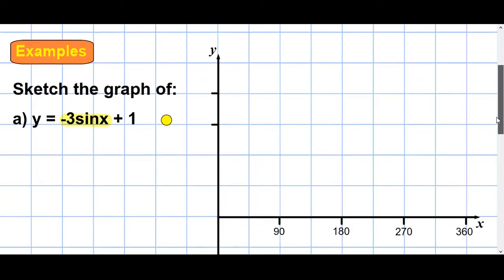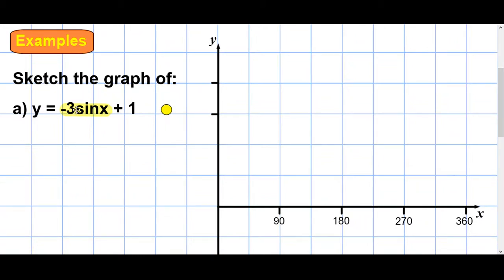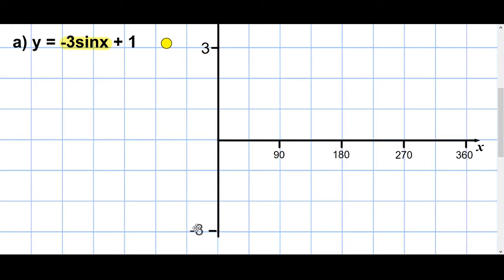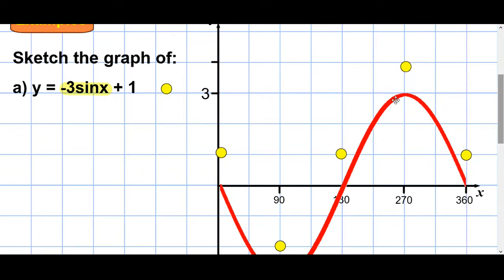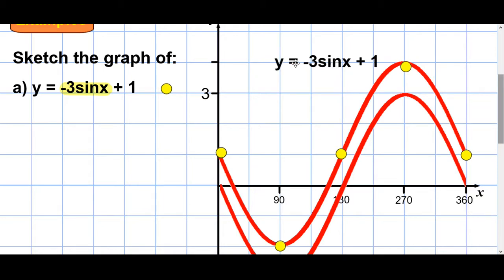A couple of harder examples. Sketch the graph of y equals minus 3 sin x plus 1 — it's got a minus at the front. The first thing is to focus on 3 sin x — a normal sine wave going to 3 and down to minus 3. But it's minus 3 sin x, so instead of going up first, it starts going down. Plot your five main points to get minus 3 sin x. Now each of those main points needs to be shifted up one position. Draw the dotted version first, then join the shifted points in a solid line. That gives you y equals minus 3 sin x plus 1, which goes up to 4 and down to minus 2.